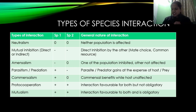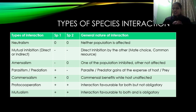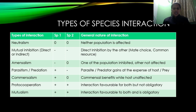उसके बाद जो association है उसे हम कहते हैं amensalism। Amensalism में एक species को हानि पहुँचती है और दूसरे species को कोई नुकसान भी नहीं होता और कोई benefit भी नहीं होता। So this is a negative and zero association — one population is getting inhibited, whereas the other population is not affected at all. This is amensalism।